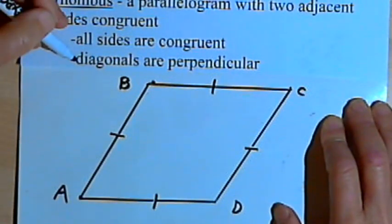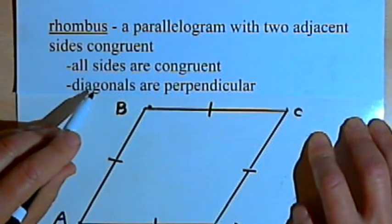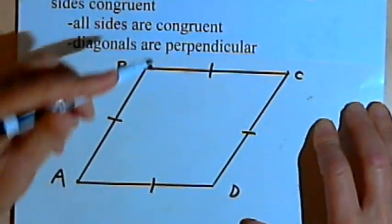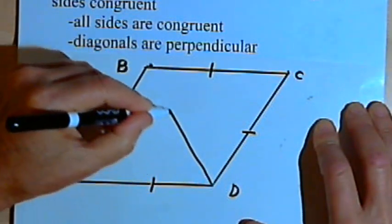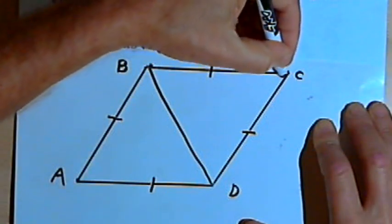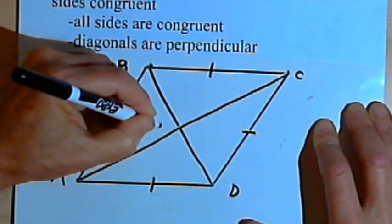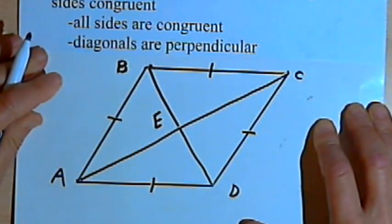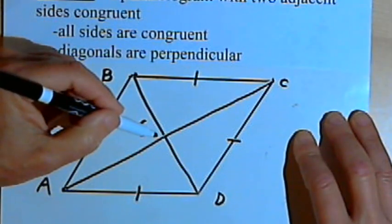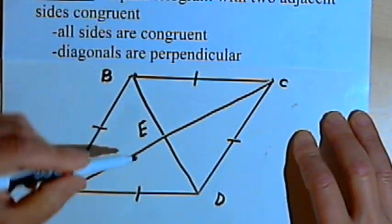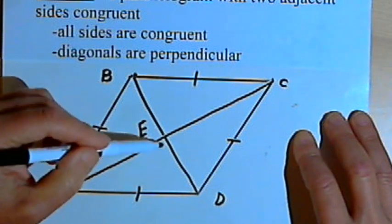The second property that a rhombus has that isn't true of all parallelograms is that the diagonals are perpendicular. I'll draw in the two diagonals — BD and AC — and at the place where they intersect I'll call that point E. The second property says that these two diagonals are perpendicular to each other, which means they form four right angles where they intersect.